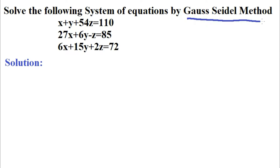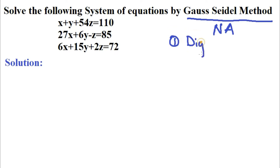The Gauss-Seidel method is used to solve linear equations with any number of variables. It is a numerical method that comes under numerical analysis. What's great about it is that it converges very fast — faster than the Gauss-Jacobi method or other methods. There are a few requirements for this: the first requirement is that it must be diagonally dominant.